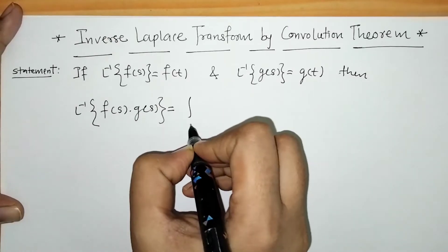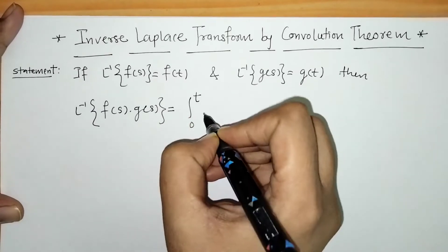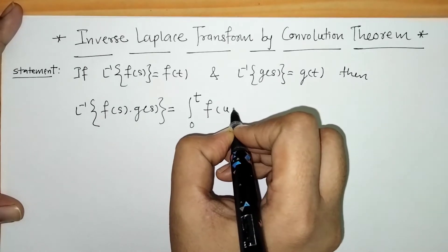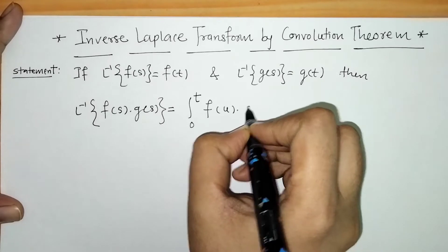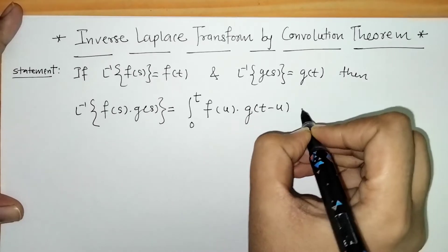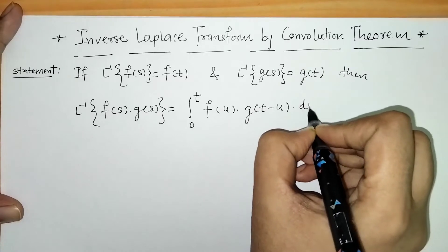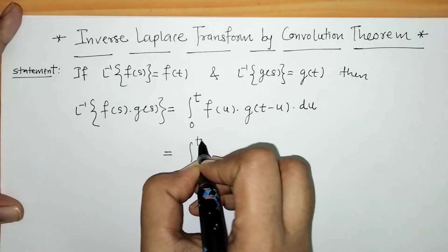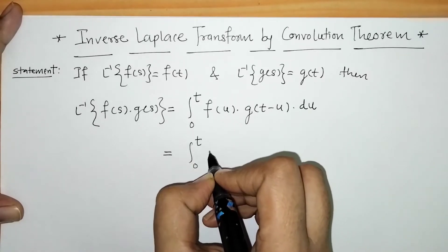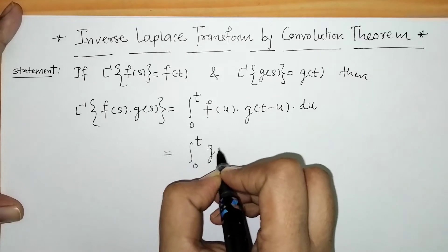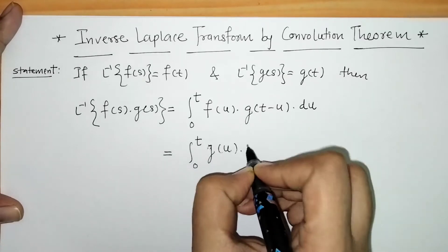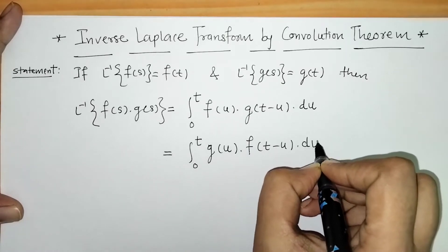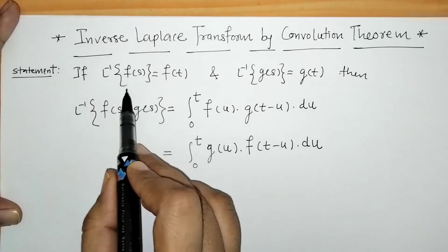The formula is: the integral within limit 0 to t of f(u)·g(t - u) du. Or equivalently, we can write this as the integral within limit 0 to t of g(u)·f(t - u) du. Both forms are with respect to u.